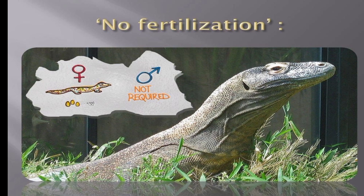In animals, parthenogenesis means development of an embryo from an unfertilized egg cell. And in plants, parthenogenesis is a component process of apomixis.